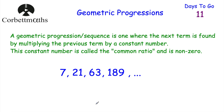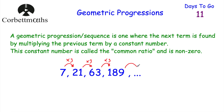If we have a look at this sequence: 7, 21, 63, 189. If we multiply by 3, we get 21. Multiply by 3 again, we get 63. Multiply by 3 again, we get 189. If we wanted to get the next term, we would multiply by 3 again, and so on. So this is a geometric sequence — we're multiplying by 3 each time.